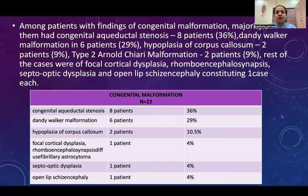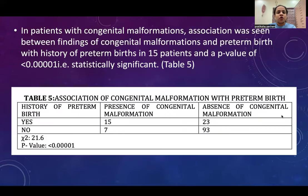Among patients with findings of congenital malformations, majority had congenital aqueductal stenosis in 8 patients, Dandy-Walker malformation in 6 patients, hypoplasia of corpus callosum in 2 patients, type 2 Arnold-Chiari malformation in 2 patients, and the rest were focal cortical dysplasia, rhombencephalosynapsis, septo-optic dysplasia, and open-lip schizencephaly, constituting 1 case each. Associations were seen between congenital malformation findings and preterm birth, with a history of preterm in 15 patients.